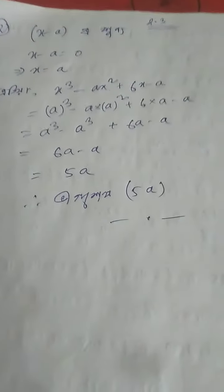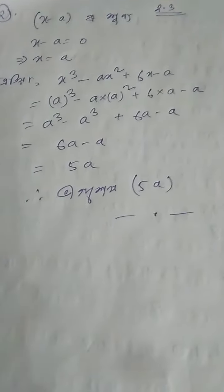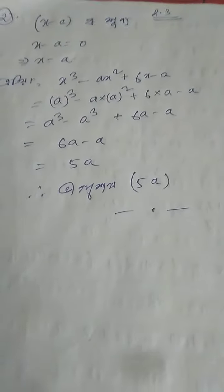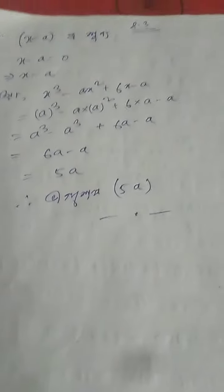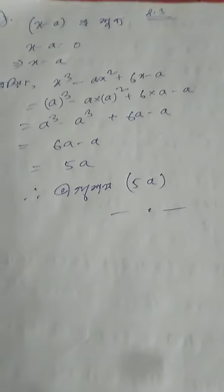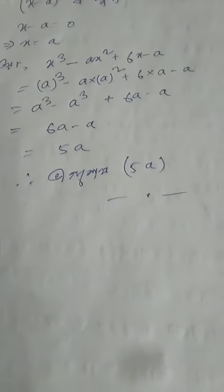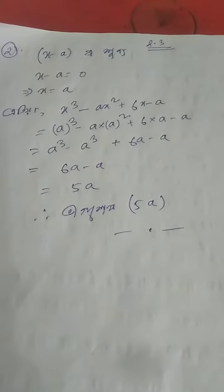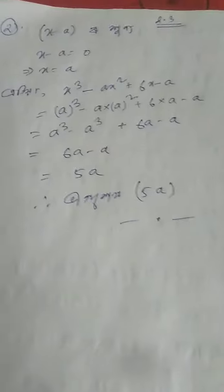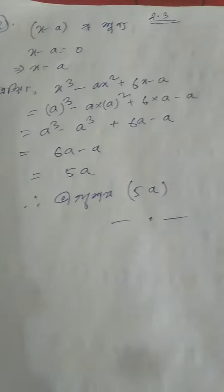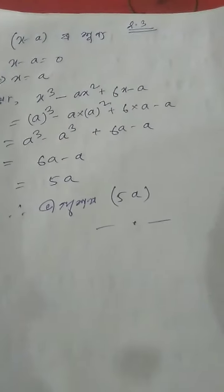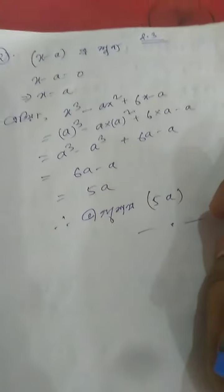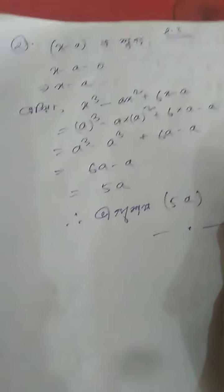If we factor this, with x minus a, we do x cubed minus a squared plus 6x minus a. When I write it out, I draw apart from theta — I draw apart to set up the division.